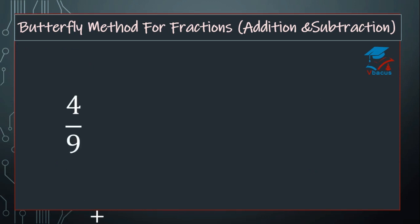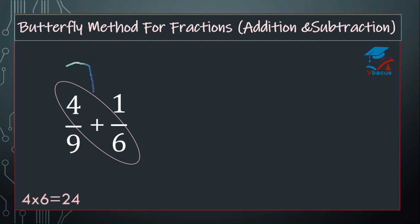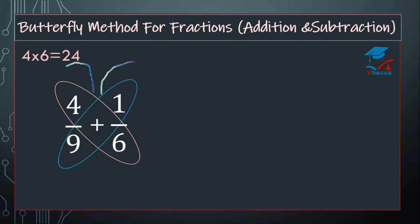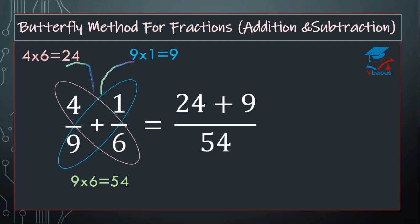Add 4 over 9 plus 1 over 6. Same method: multiply 4 by 6, it will become 24. Multiply 9 by 1, it will become 9. Then multiply the denominators, that will become 54. Add 24 plus 9 over 54, which gives 33 over 54.